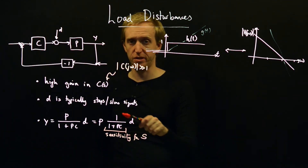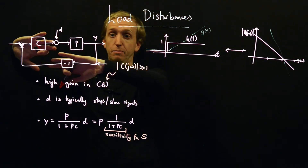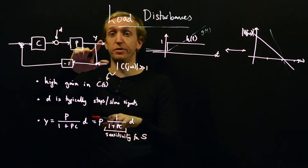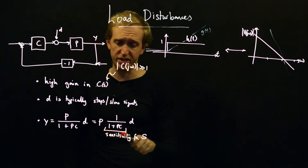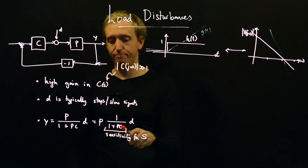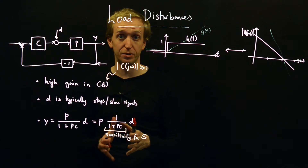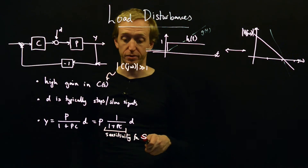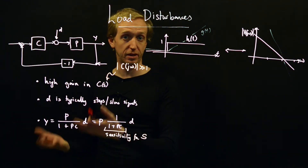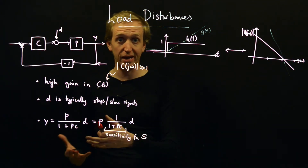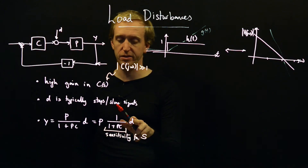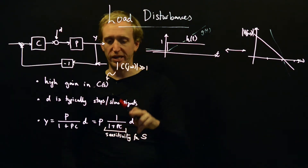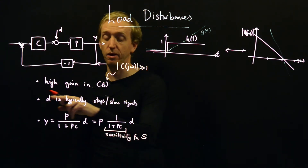The sensitivity function S = 1/(1+PC) compares open and closed loop behavior. In the absence of feedback, the effect of the disturbance on the output would just be P times D. When we close the loop, we scale the whole thing by 1/(1+PC). So if we want to reduce the effect of disturbances D on the output Y, we need our sensitivity function to be very small — specifically in the frequency ranges where our disturbances typically act.